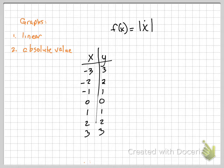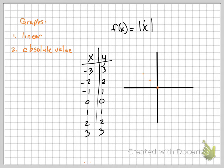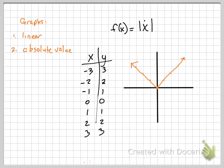So if I graph this — I have (0,0), (-1,1), (-2,2), (-3,3), (1,1), (2,2), (3,3) — I get this nice V shape. Just so you know, absolute values will always be straight lines like that. They're not curved. They'll always be V shape — it's either going to be peaks or valleys. Just like a parabola is either a smiley face or a frowny face, absolute value is either a valley or a peak.